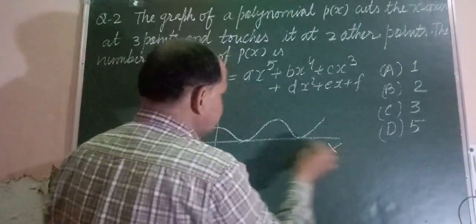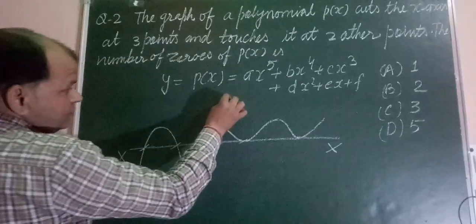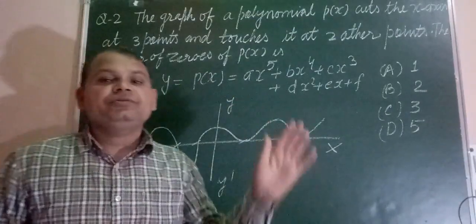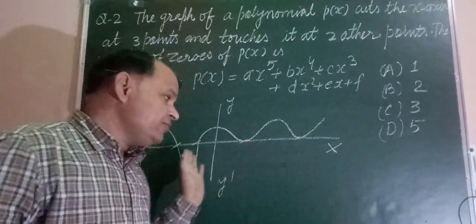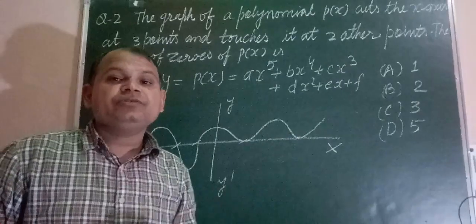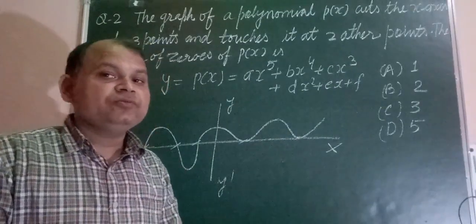So it has 5 roots because it is cutting at 3 points, giving 3 solutions, and it is touching at 2 other points, so it also gives another 2 solutions.